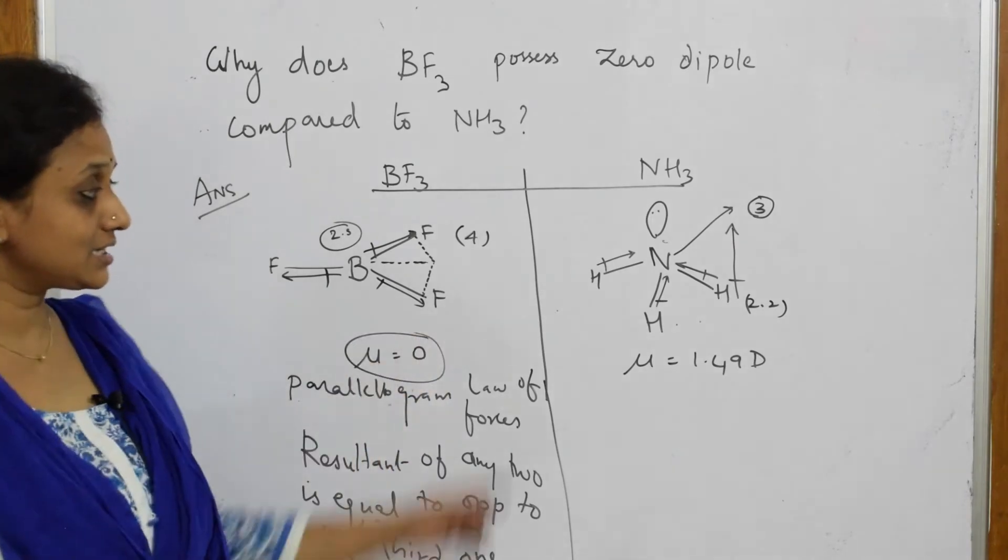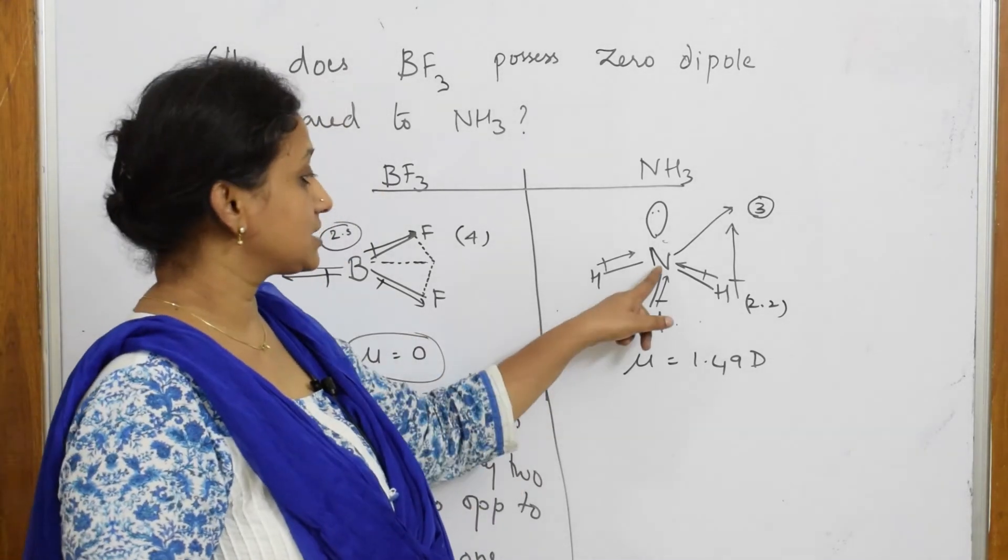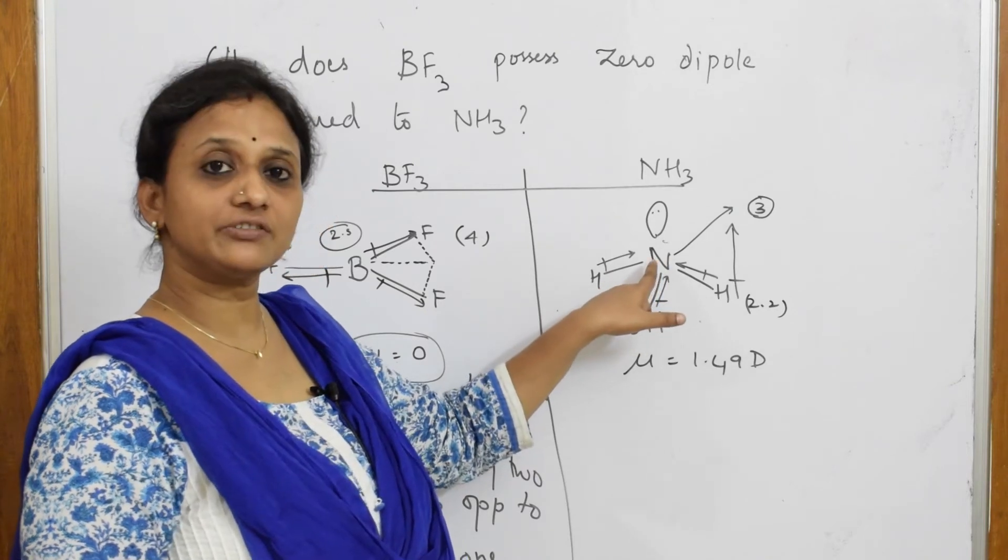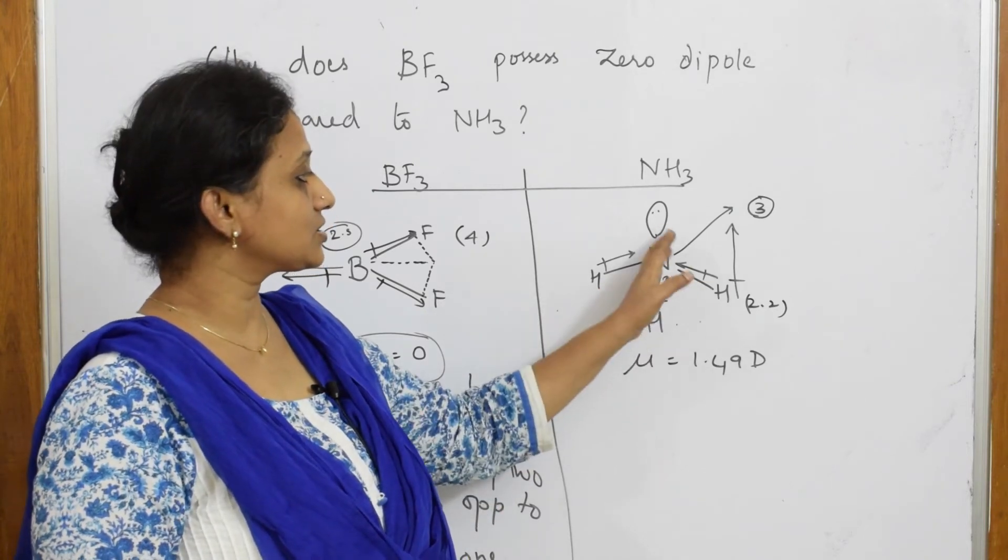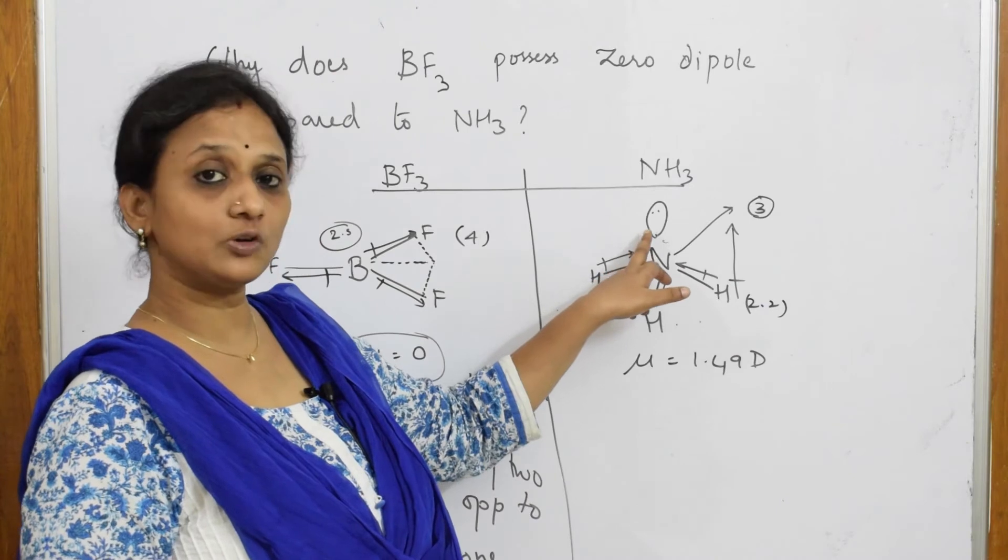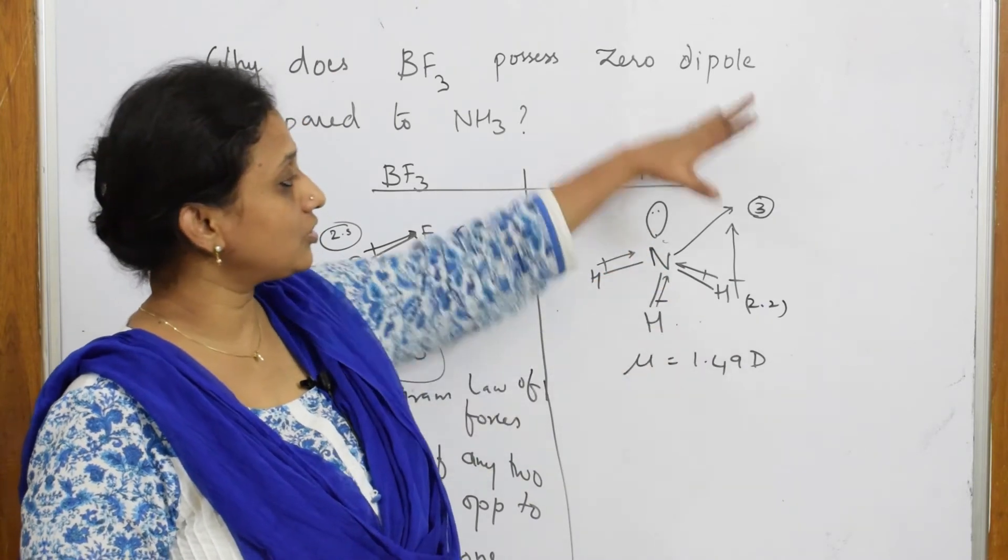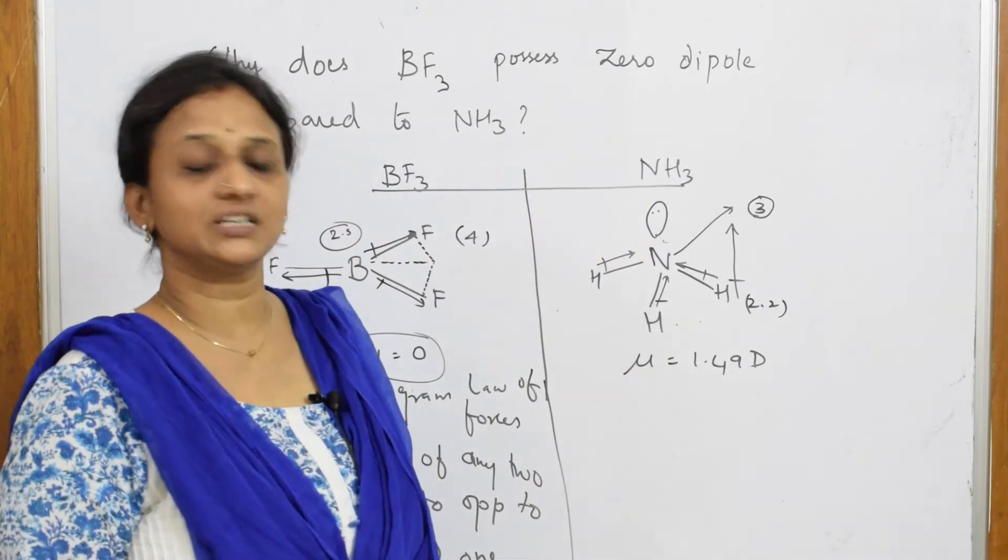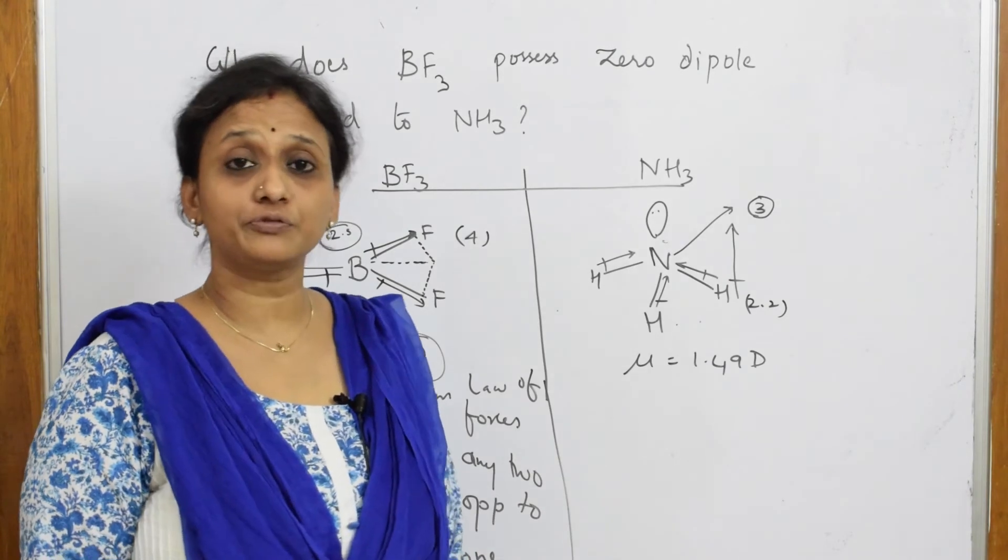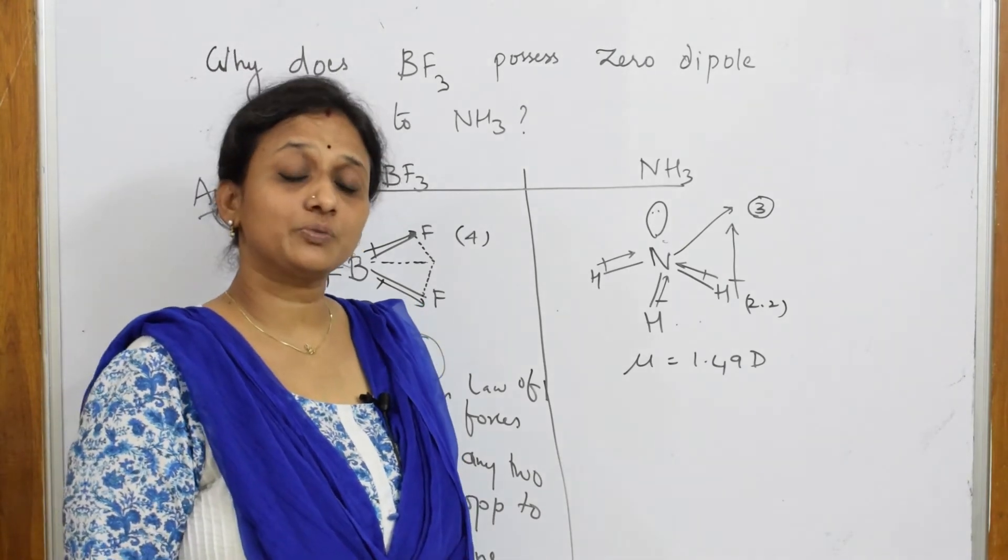But in this case, what's happening, this is dragging, so these electrons are dragged towards electronegative nitrogen atom. The whole electron density is dragged towards nitrogen and hence it poses 1.49, almost 1.49 D by.